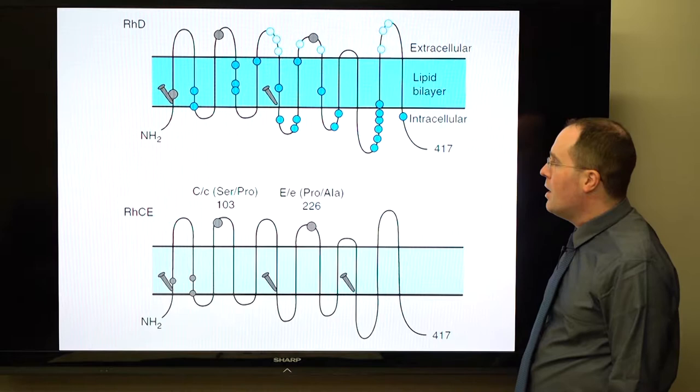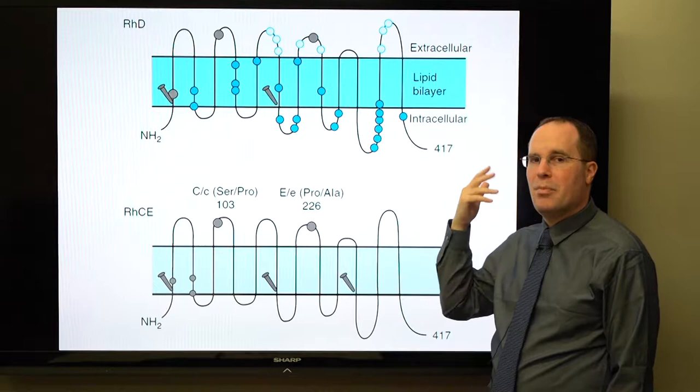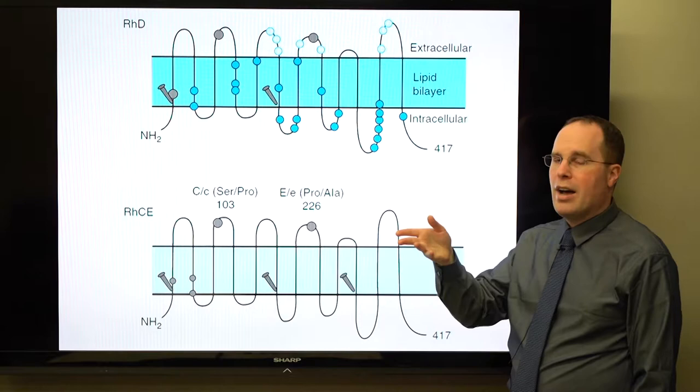For example, from one parent you could get the D gene along with big C and big E. From the other parent you could get no D gene, plus little c and little e. In that example you would be positive for all five antigens.